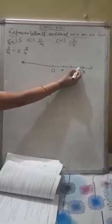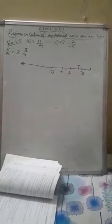1, 2, 3, and this is 4. What is the numerator? The numerator is 3. So you count 1, 2, 3. Here, it is the required position of this number. Here you would write 11/4. This way you can do this on the number line.